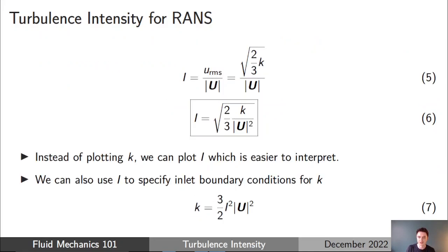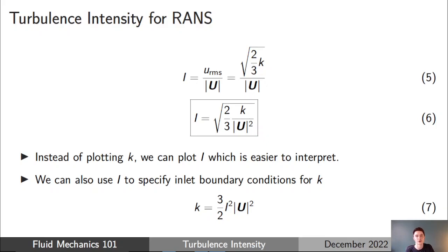Equation six is a key result. If we have a value of turbulent kinetic energy k, we multiply it by two-thirds, divide by the local velocity magnitude squared, and take the square root — converting it into a turbulence intensity that's much easier to interpret. We can evaluate that and find our turbulence intensity is 1%, which is quite low, or 10–15%, which is quite high. We can also rearrange equation six to give equation seven, which lets us apply boundary conditions for k if we know the expected turbulence intensity.